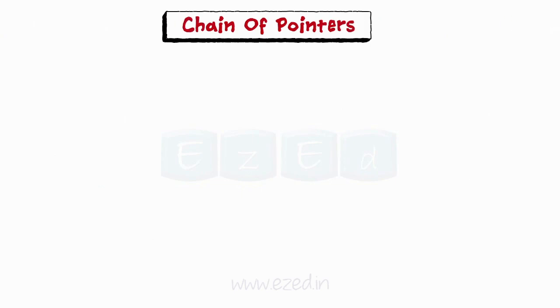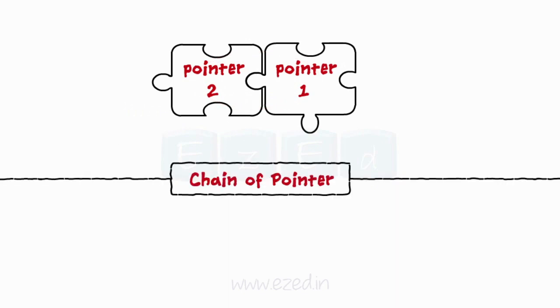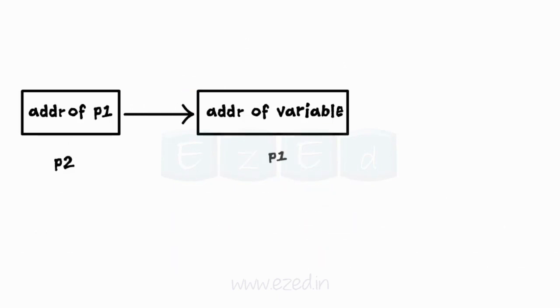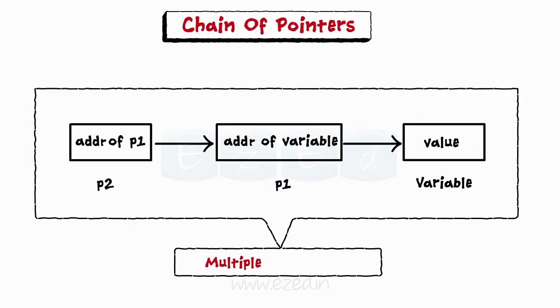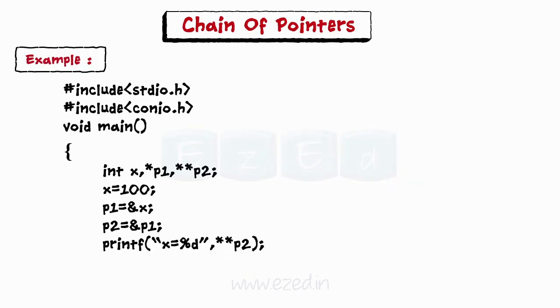Now, let us study chain of pointers. It is possible to make a pointer point to another pointer. This is called as chain of pointers. It is also called as a pointer to pointer. Here, the pointer variable p2 contains the address of p1, which points to the location that contains the desired value. This is known as multiple indirections. Here is a program that explains pointer to pointer notation.